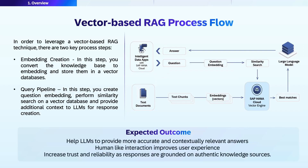The RAG technique helps LLMs provide more accurate and contextually relevant answers based on a knowledge base. As vectors provide better contextual understanding, users can interact in human-like language, which improves the overall user experience. Since results are grounded on reliable knowledge sources, the technique boosts trust, further leading to better adoption.